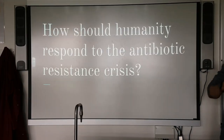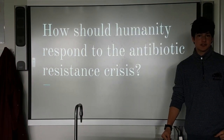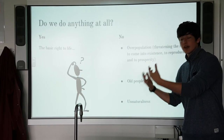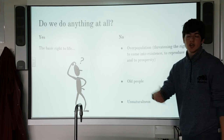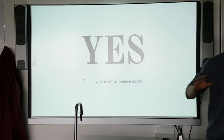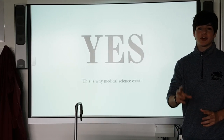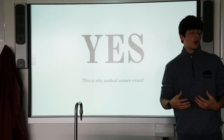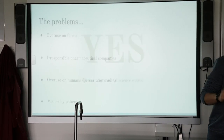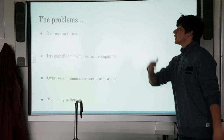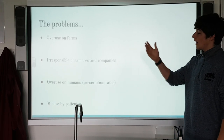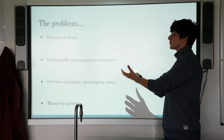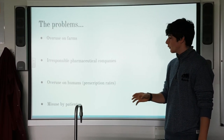Now that we've got the science out of the way, let's look at the question: how should we respond to the antibiotic resistance crisis? First, should we do anything at all? There are arguments from the other side like overpopulation and the unnaturalness of using antibiotics, but overall, science says yes — the basic right to life always overrides. Antibiotics are the correct approach, and we need to develop our medicine to fight the antibiotic resistance crisis and therefore prevent a lot of suffering. So let's identify the problems that are encouraging antibiotic resistance: overuse of antibiotics in agriculture, overuse on humans — prescription rates are soaring out of proportion — and pharmaceutical companies being irresponsible.